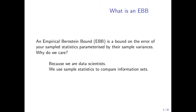Today I want to talk about a specific kind of concentration inequality called an empirical Bernstein bound. An empirical Bernstein bound is a bound on the error of your sample mean, or all your sample statistics, that are parameterized by their sample variance. And why do we care about this? Well, because we're data scientists and we use statistics to characterize our information.